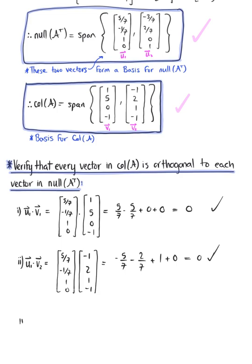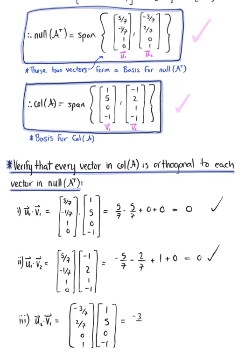Case 3: compute the dot product of u₂ with v₁. Vector u₂ is (-3/7, 2/7, 0, 1) dotted with (1, 5, 0, -1). Computing: -3/7 + 10/7 + 0 - 1 = 7/7 - 1 = 0.